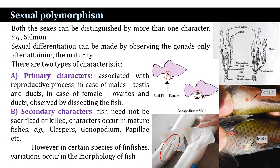There are two types of characters. Primary characters are associated with the reproductive process — in case of males, testes and ducts; whereas in case of females, ovary and ducts. These are observed by dissecting the specimen.